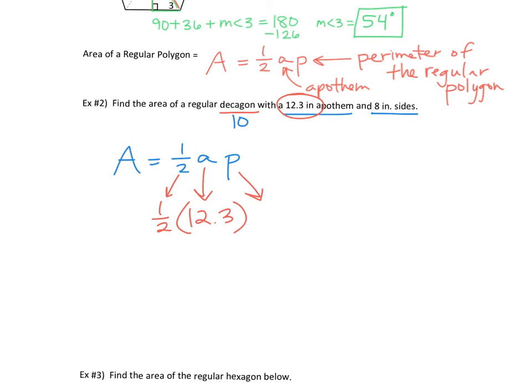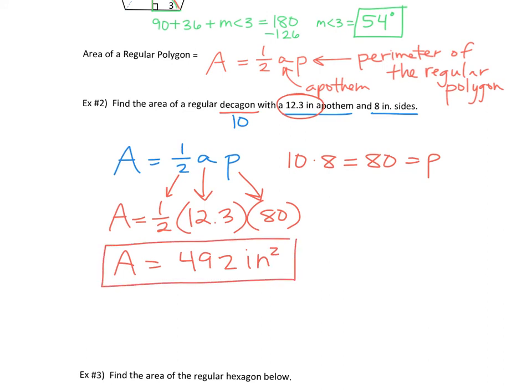80. Perimeter would be 10 times 8. There are 10 sides. They're each 8 inches long. So 80 is your P. That means we're multiplying this by 80. And you literally plug that into your calculator. One half times 12.3 times 80. And you get 492 square inches. Does that make sense?